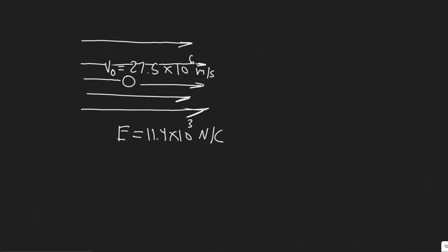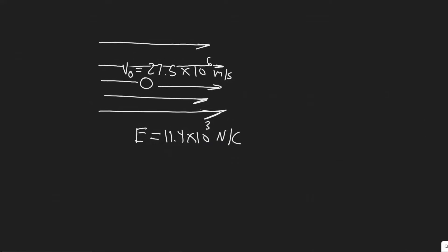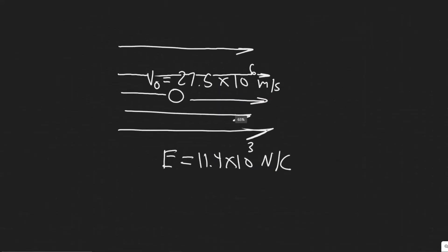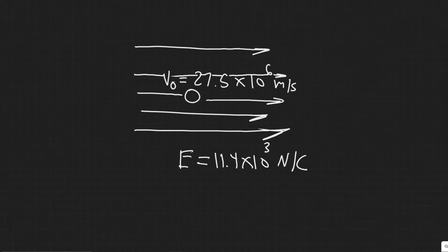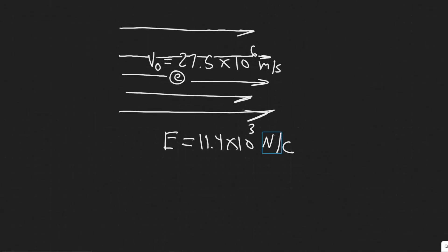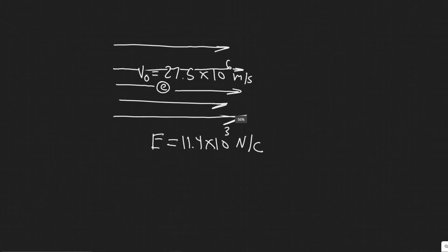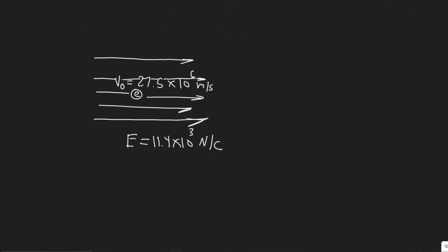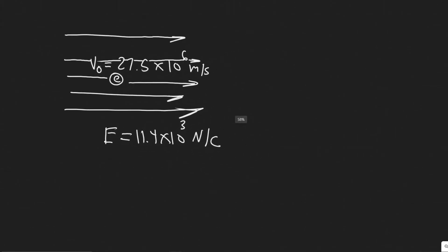In this problem we're going to be using kinematics mixed with a couple of other things. But first you want to draw what's going on. We have this particle — we know it's an electron. We know its speed is 27.5 times 10 to the 6 meters per second, and it's traveling parallel to the electric field of 11.4 times 10 to the 3 newtons per coulomb. What we're trying to find is how far the electron will travel before it stops, so first I'll lay out the kinematics.